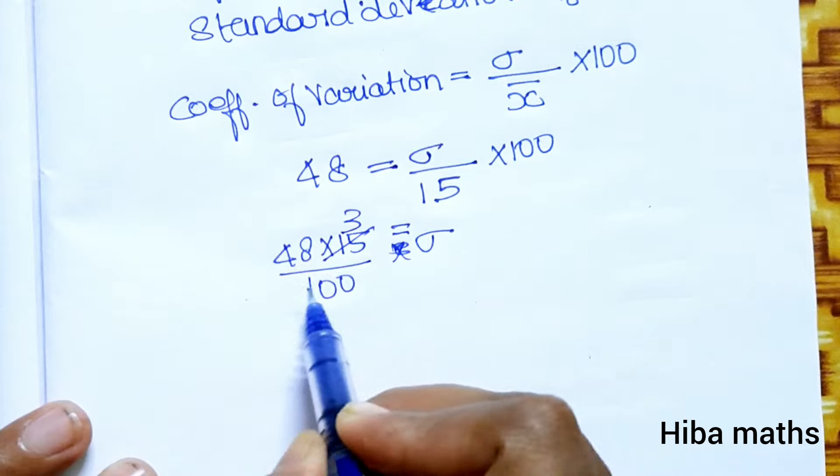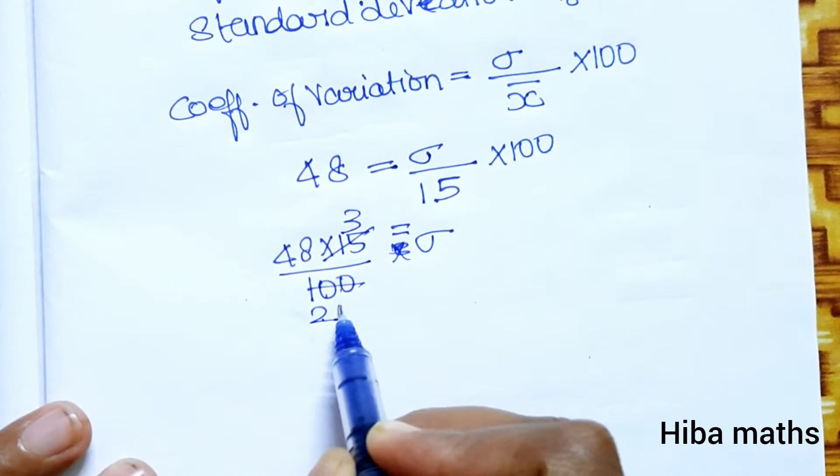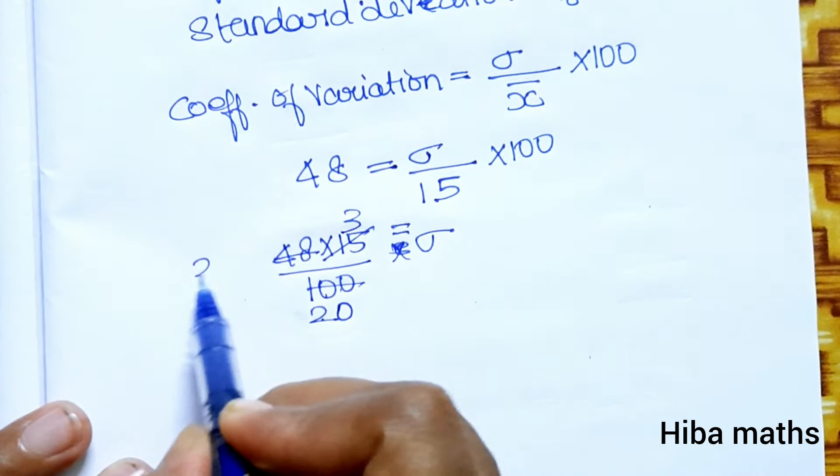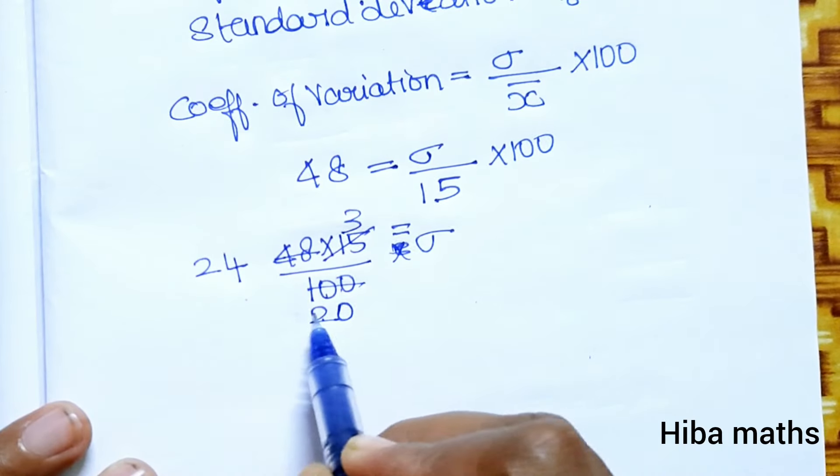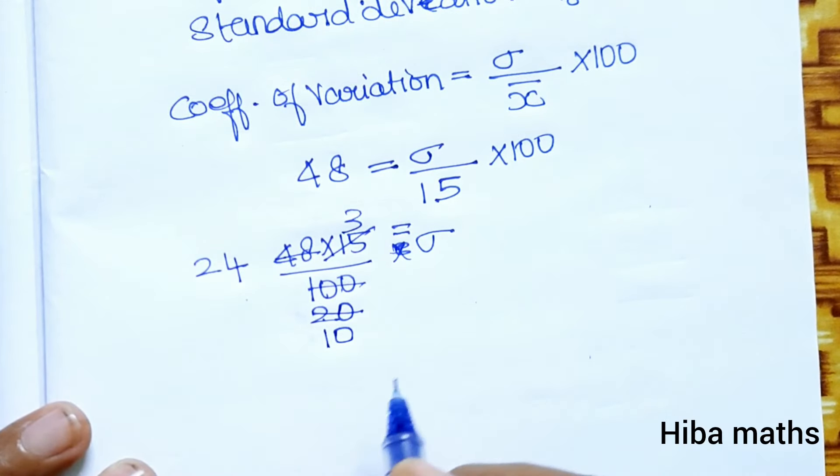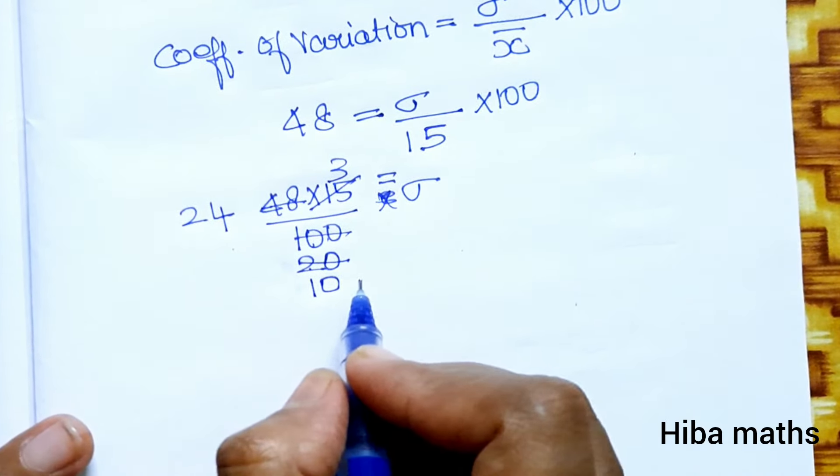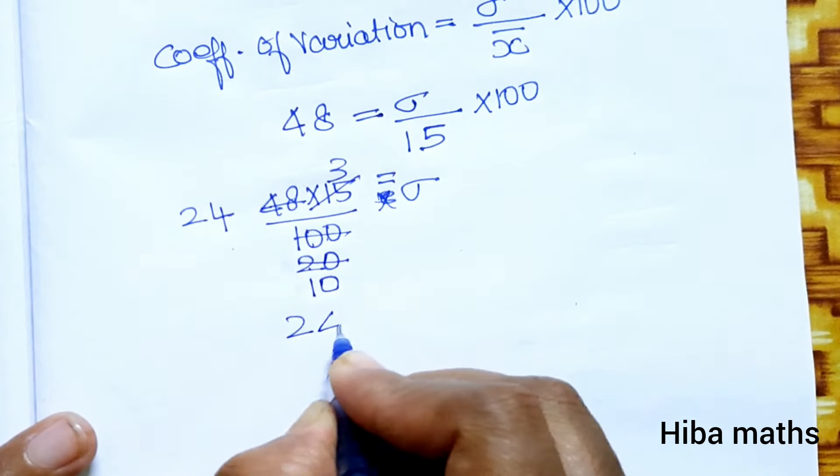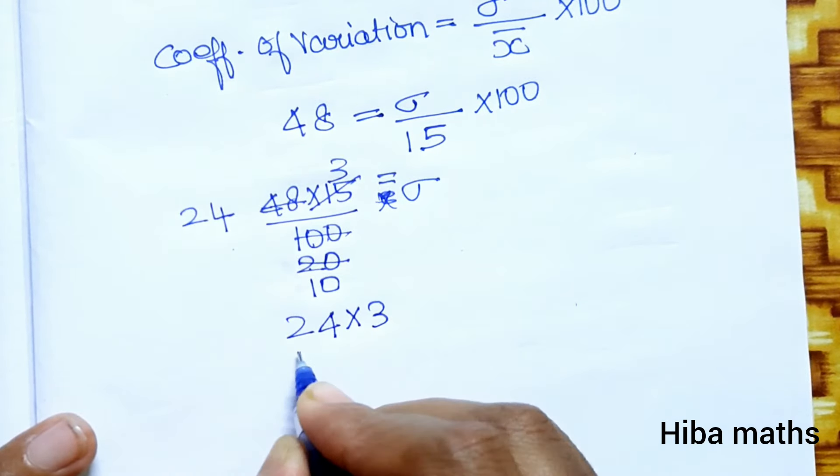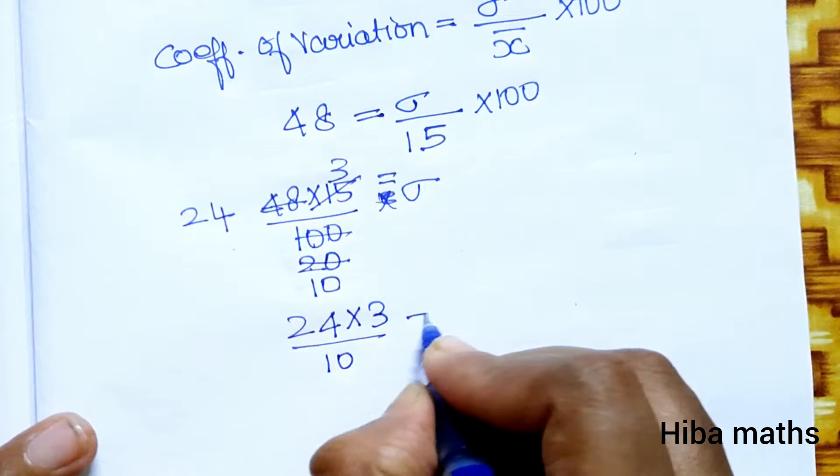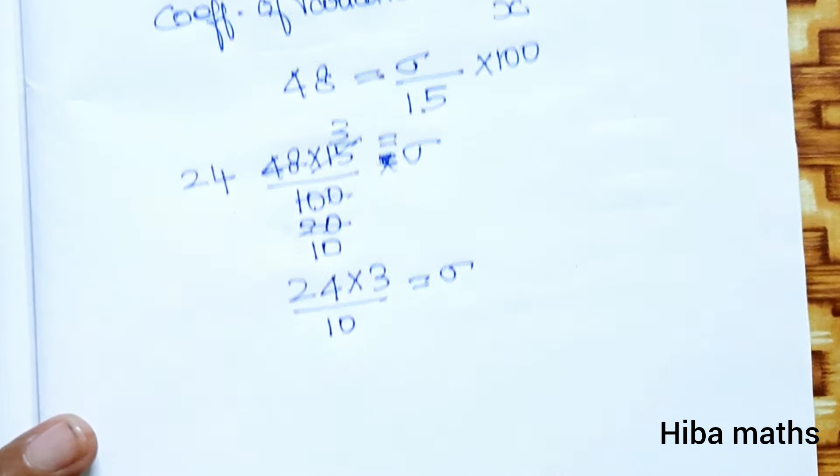If we cancel this, 5 goes into 15 three times, 5 goes into 100 twenty times. So we get (48 × 3) / 10. Now 10 divided by 10, the balance is 24 × 3 divided by 10, because one decimal place will be there.